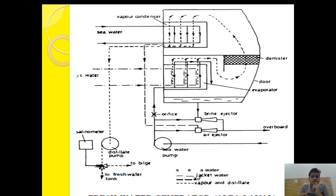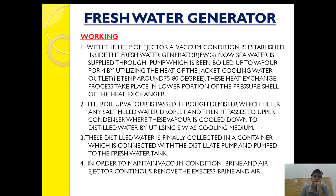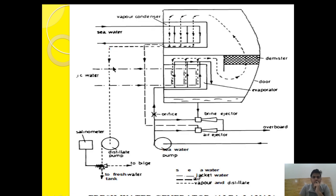Inside the fresh water chamber we are creating a low pressure zone — almost a vacuum zone. By doing so, we are decreasing the boiling point temperature of water to such a point that by using simple heat exchange we can extract fresh water. Before explaining the working, let me tell you the components first.